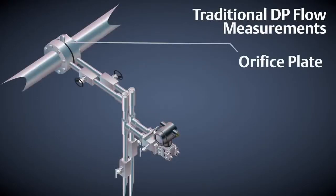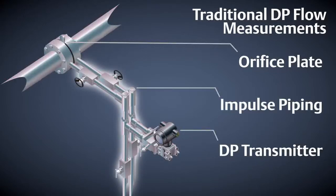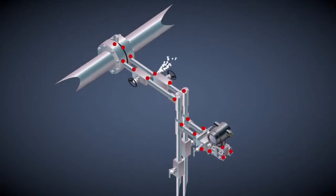Traditionally, transmitters were connected to the process with external impulse piping. Impulse piping is a major expense and gives opportunities for multiple leaks and creates unnecessary safety hazards by adding extra valves and manifolds to the process connection.